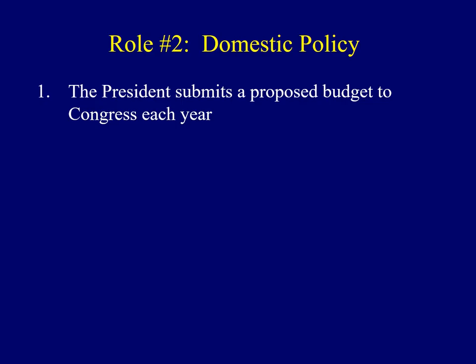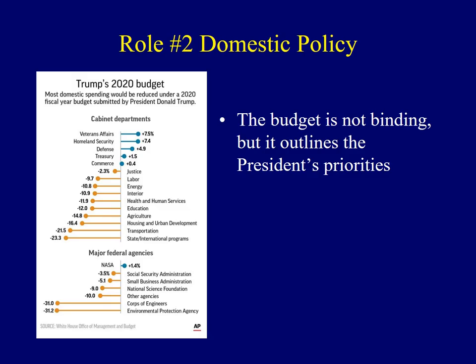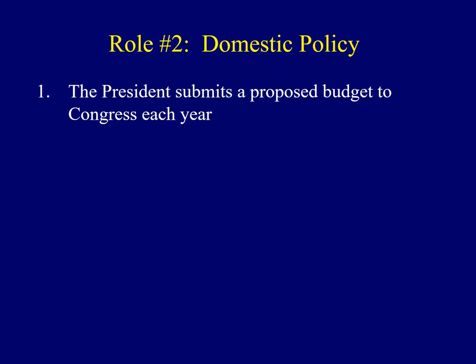The next role or function deals with domestic policy. One way the president shapes domestic policy is through the budget. The president is required to submit to Congress a proposed budget each year. Now the president can propose a budget, but unless Congress passes it, it's not binding. What's important is that it outlines the goals and top priorities of the president. You can see an example here of President Trump's 2020 budget — the areas in blue show where he wants to increase funding, and the areas in yellow show where he wants to cut funding.